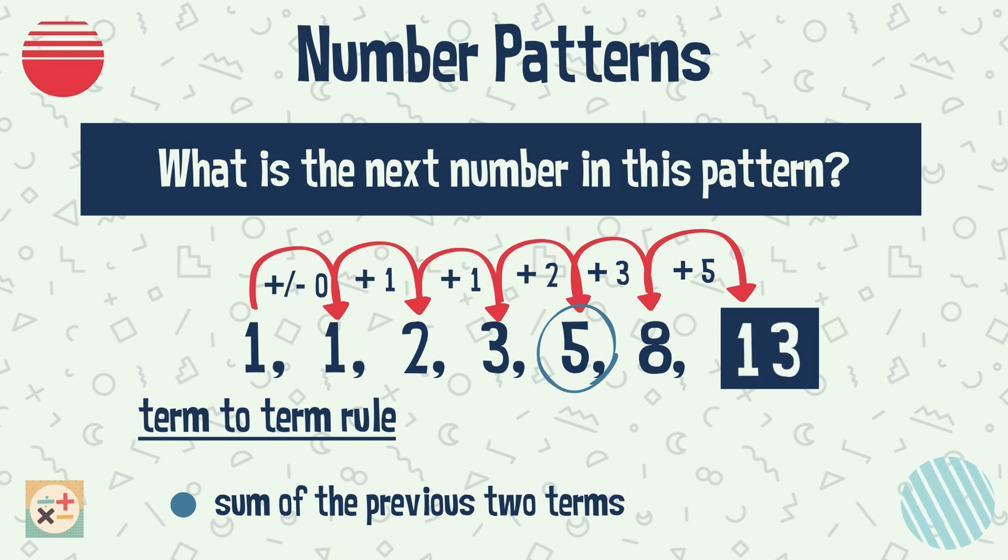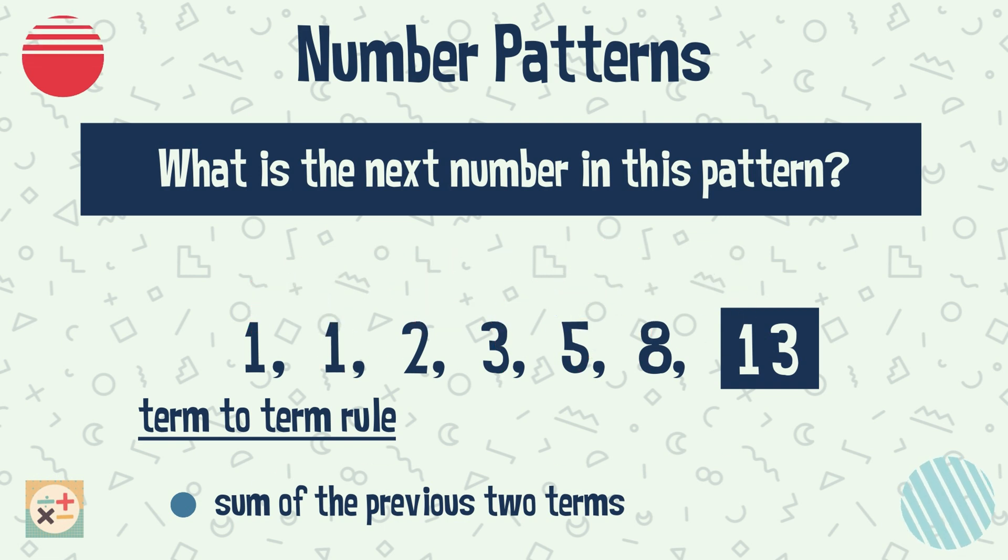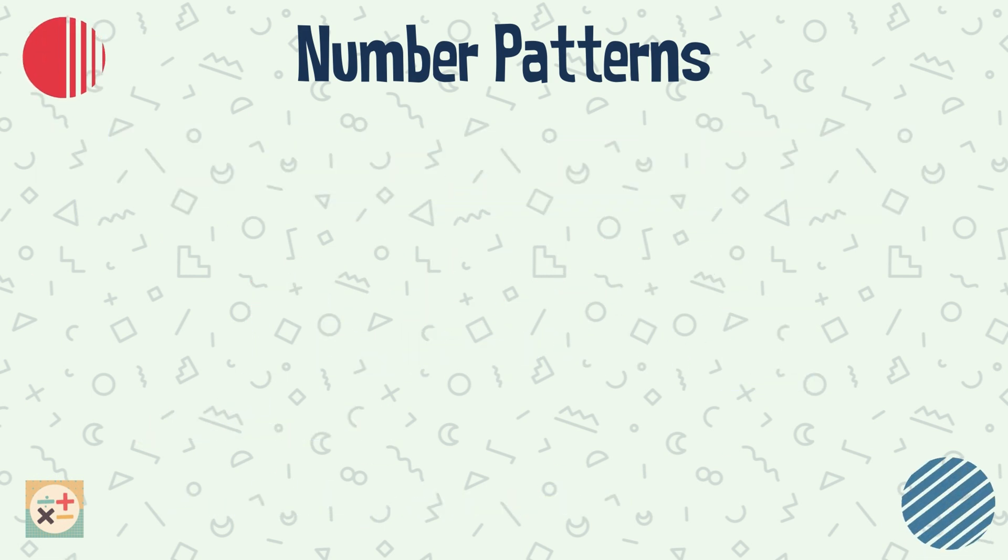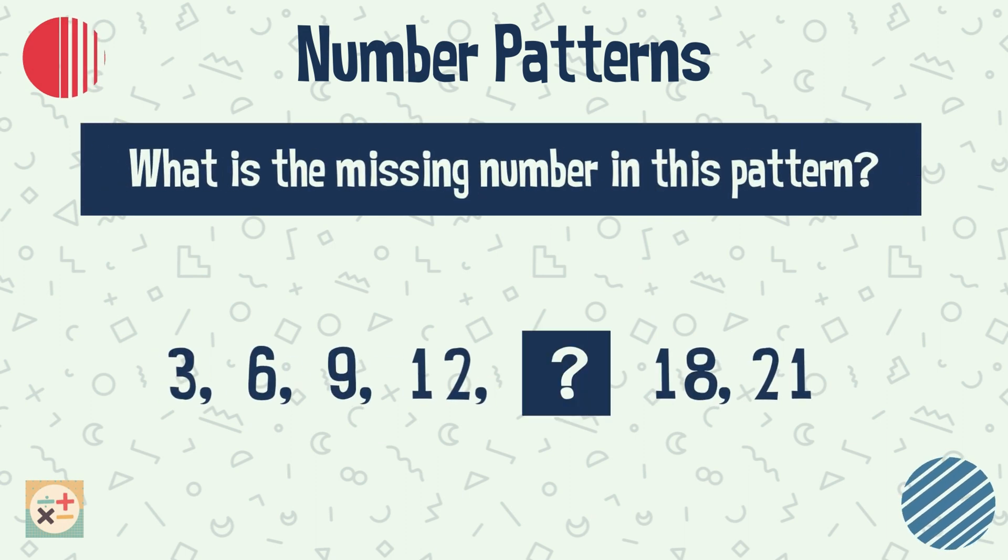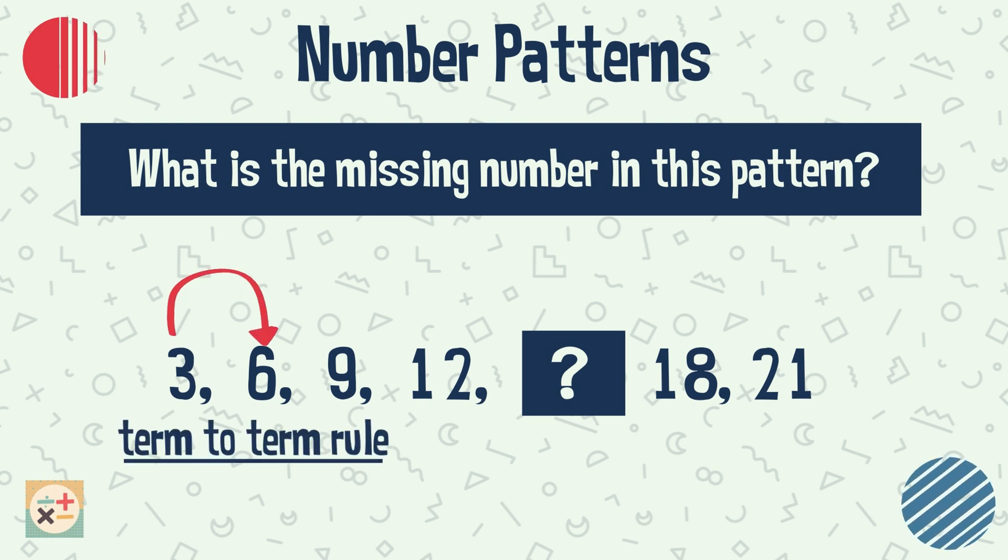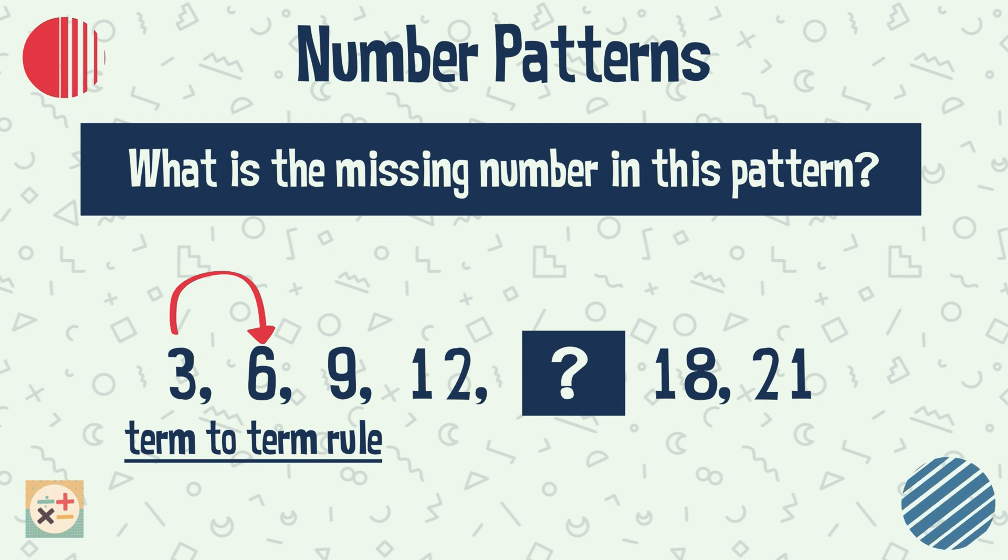Therefore, the next number in the sequence is 13. For this next sequence, we are asked to find a missing term from within the sequence, the fifth term. Let's start with looking at the possible relationship between the first two terms. We can either multiply 3 by 2 in order to get 6, or we could add 3.